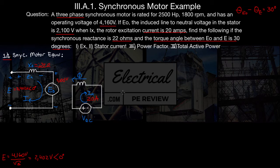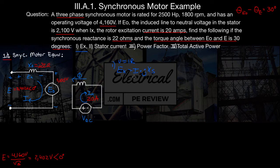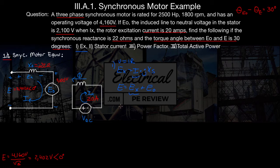First thing it wants us to find is EX — the voltage across our synchronous reactance. We could use Ohm's Law: EX equals stator current I times JX of S, but we don't know I yet. Instead, we know our supply voltage has to be the sum of the synchronous reactance voltage drop plus EO. So E equals EX plus EO, and we can rewrite that as EX equals E minus EO. Don't forget these are all phasors — they have both magnitude and angle.